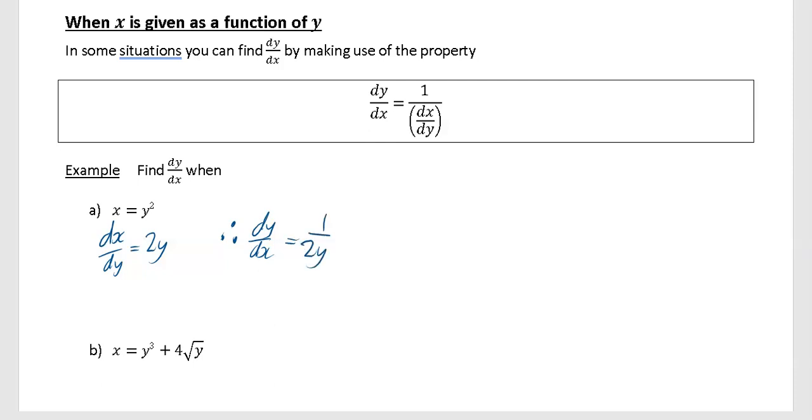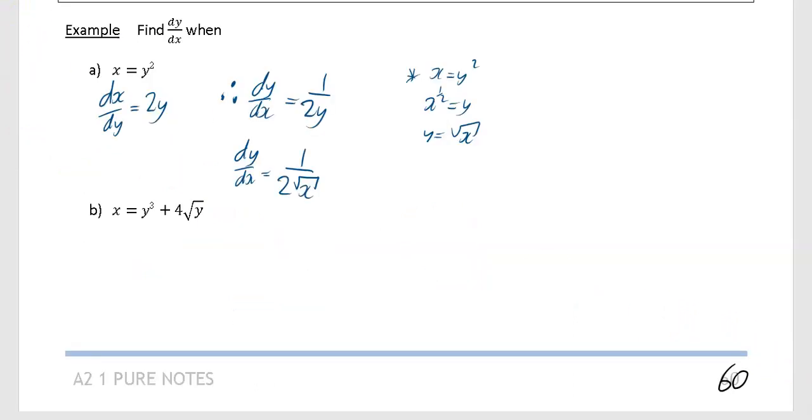Now the only problem with this is your dy by dx is not given in terms of x, so you could change this. We know that x is equal to y squared, which means x to the power of a half is equal to y, or y is equal to the square root of x. So here you could say that dy by dx is equal to 1 over, and instead of writing 2y, you write 1 over 2 square root of x.